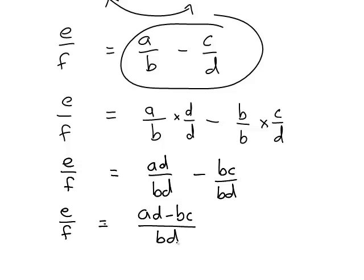And now that we have a single fraction on the left and a single fraction on the right, we can now take reciprocals of both sides. So that we get f divided by e, when we take reciprocal here, or in other words flip that fraction over, is equal to bd divided by ad minus bc.